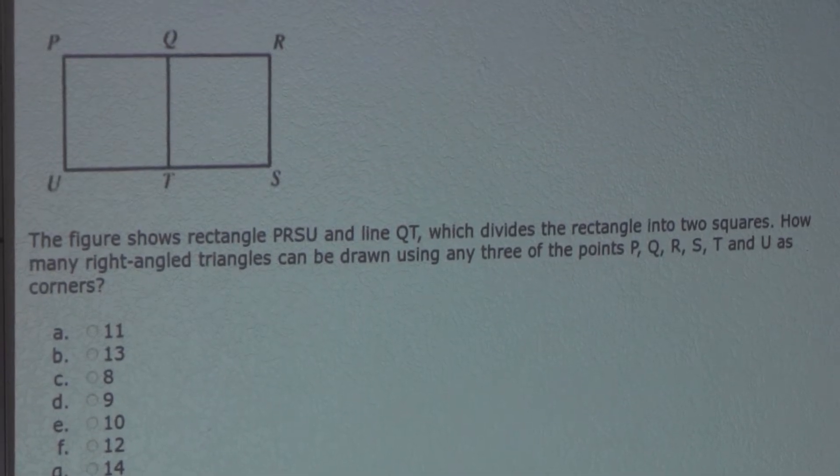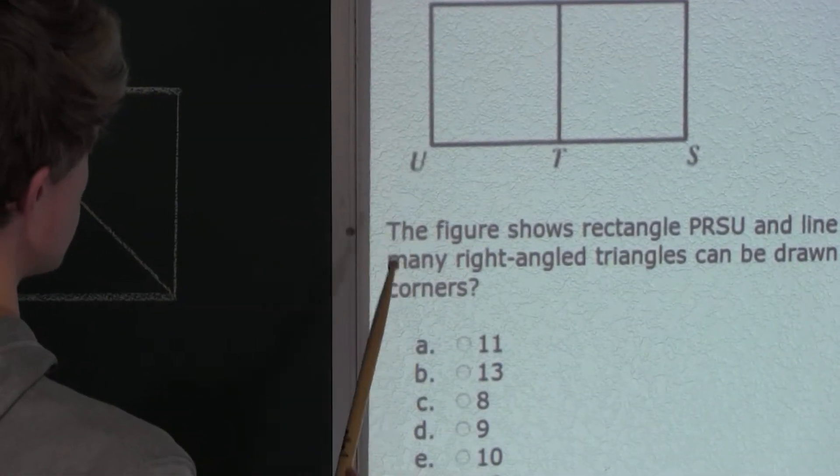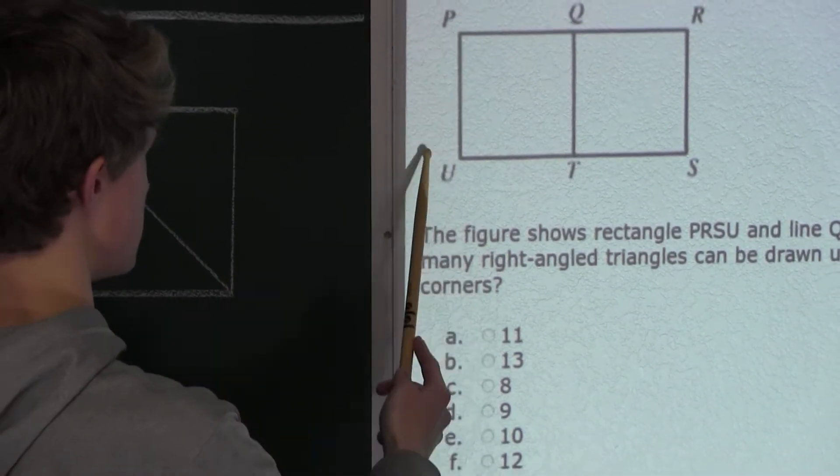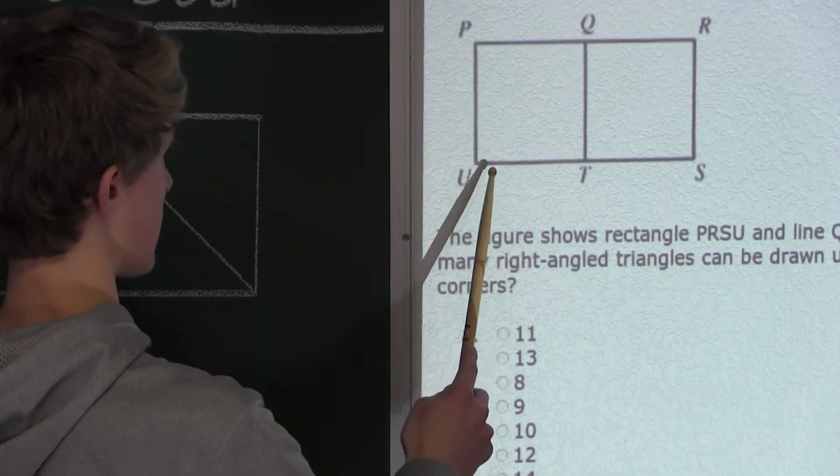Okay, so now let's look at the square P, U, T, Q. So we know that this square has four corners, P, U, T, Q, and in each corner there is a right angle.